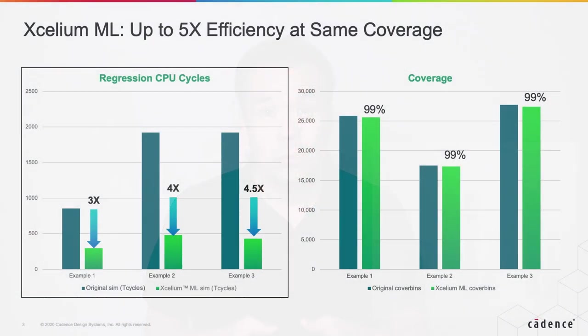It then uses machine learning algorithms to identify how the specific actions taken in the test bench, which constitute the test bench behavior, influence the coverage of the individual bins in your coverage models. It then uses this information to produce a smaller, condensed regression which can achieve the matching coverage, but much faster.